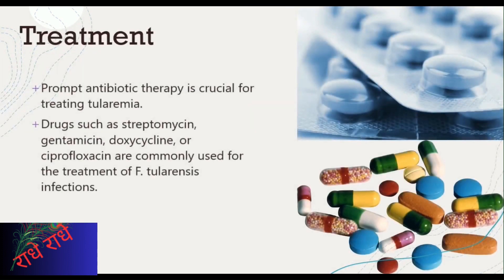Prompt antibiotic therapy is crucial for treating tularemia, which is caused by Francisella tularensis. Drugs such as streptomycin, gentamicin, doxycycline, or ciprofloxacin are commonly used for the treatment of F. tularensis infections. It is important to seek medical attention if you suspect you have been infected with tularemia, as early treatment can improve outcomes and reduce the risk of complications.